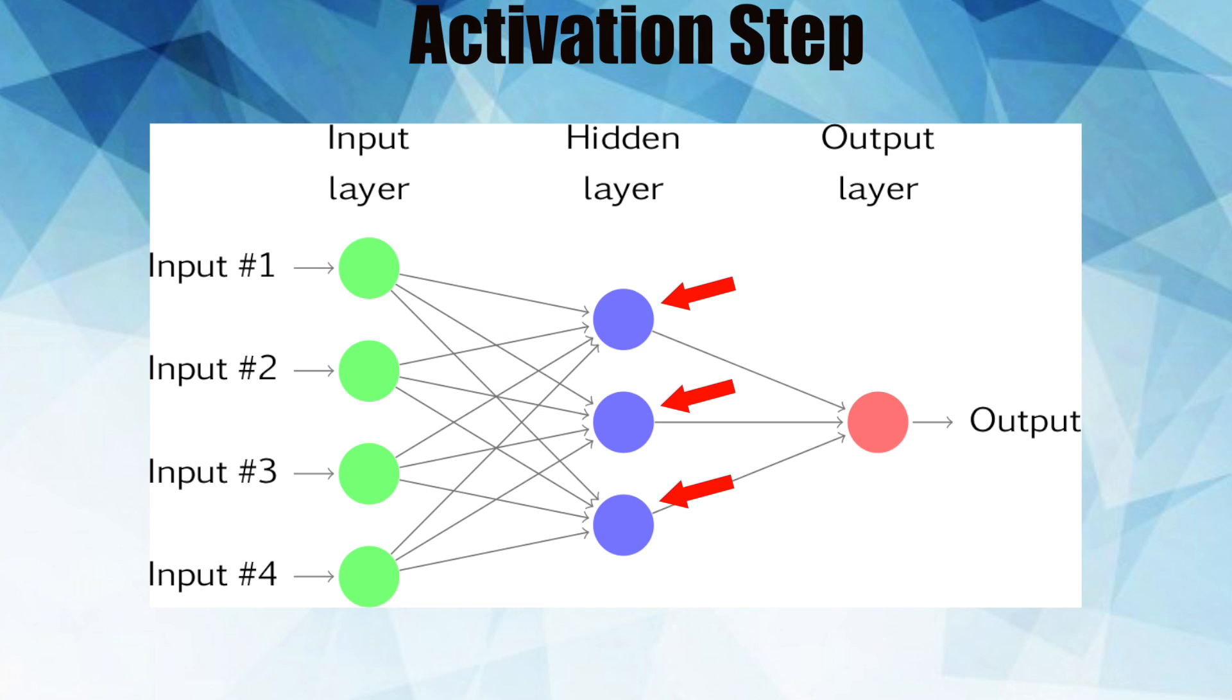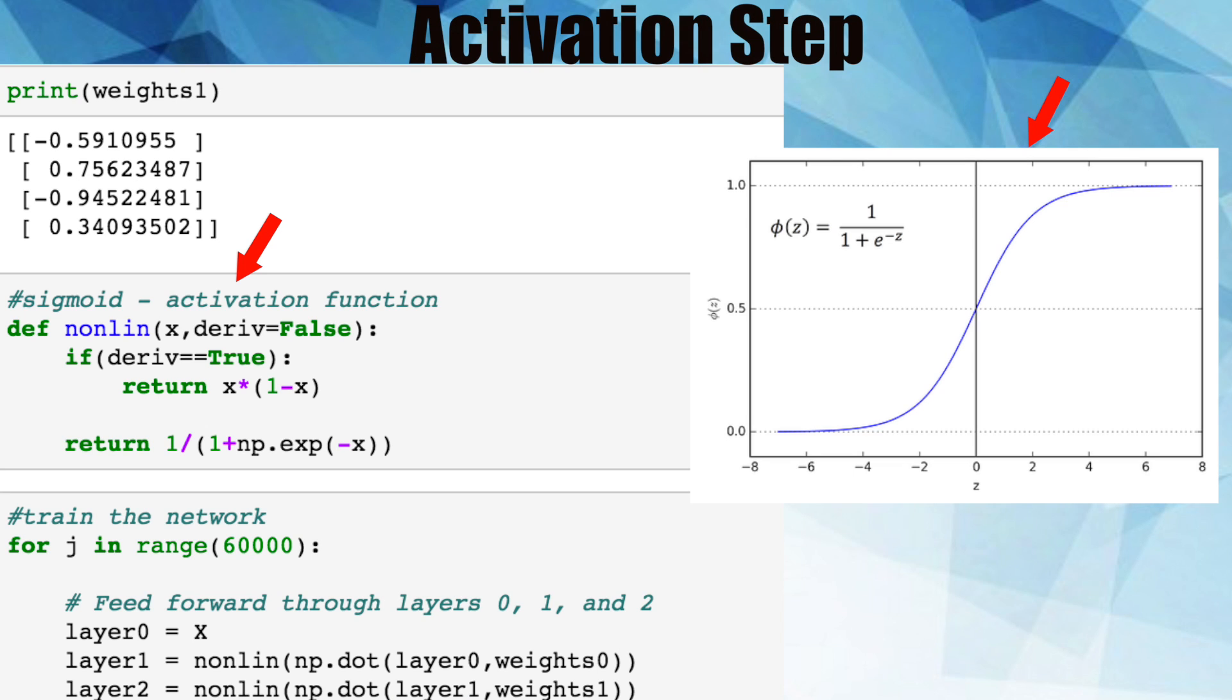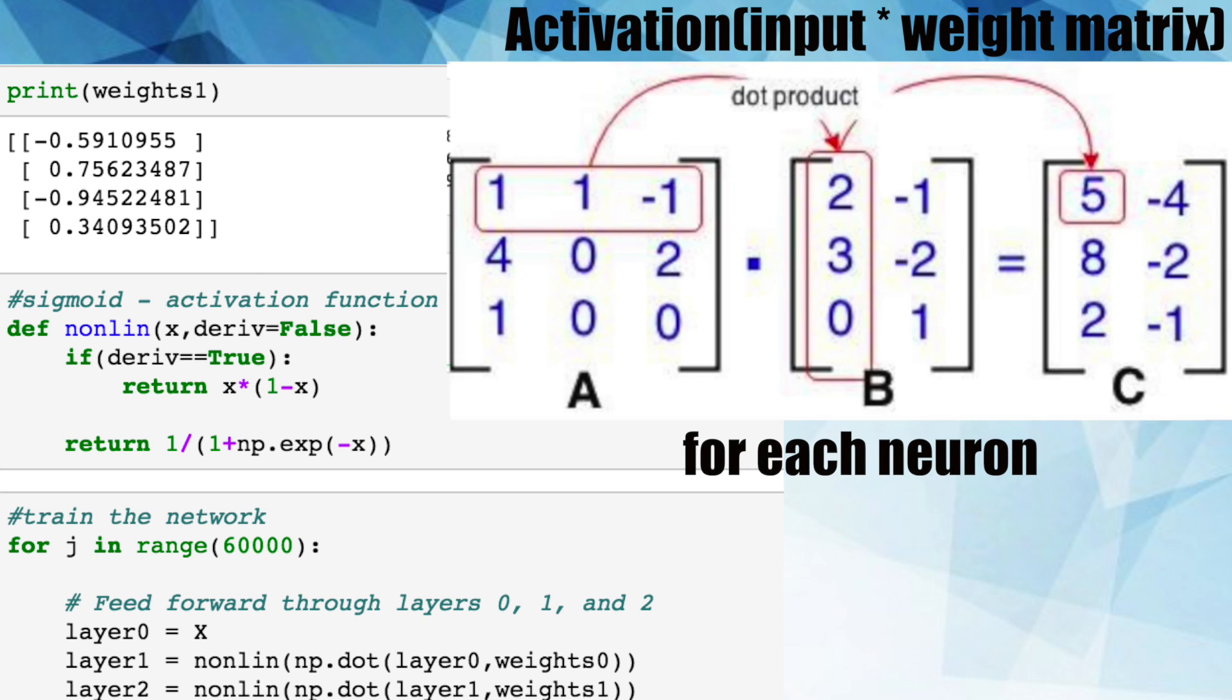We'll take each of those values and convert them to a probability value. That is a value between zero and one by applying an activation function to it. The type we'll use in this example is a sigmoid. So each neuron receives a set of inputs performs a dot product and then applies an activation function to it. We'll just repeat this same process again to calculate the output prediction.